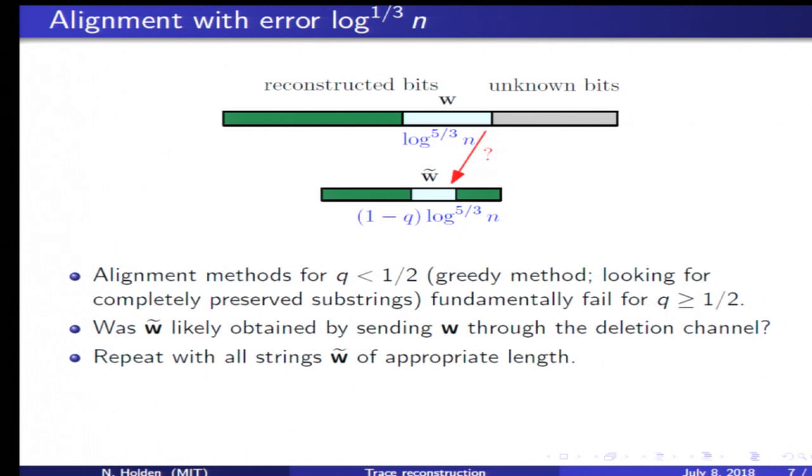What do we do? First, we choose W to be some part of the input string X consisting of reconstructed bits, but which is rather close to the first bit which is unknown. Then we apply the test multiple times with all possible strings W tilde of appropriate length.